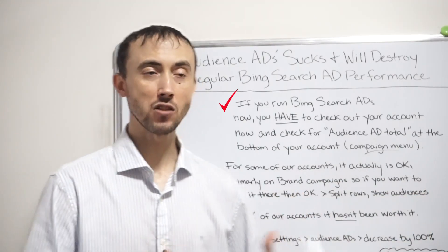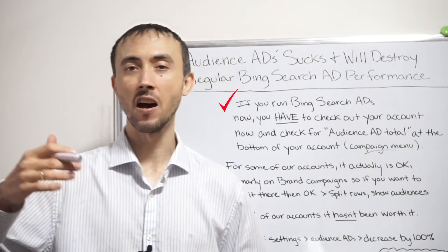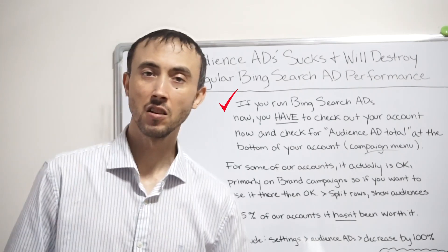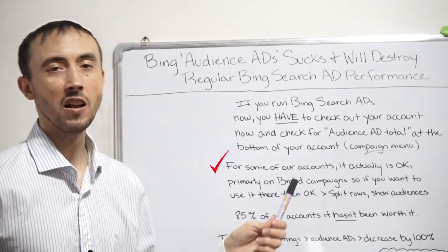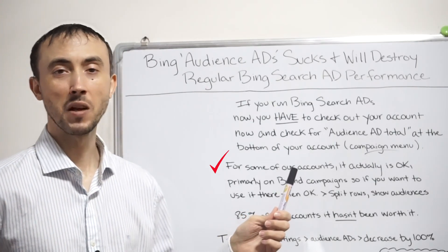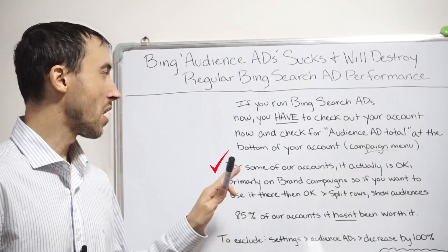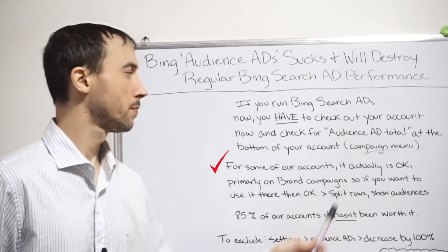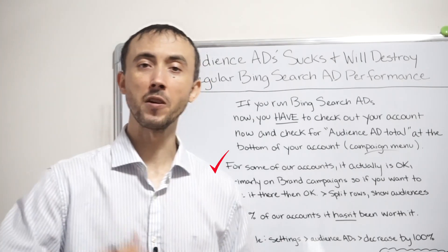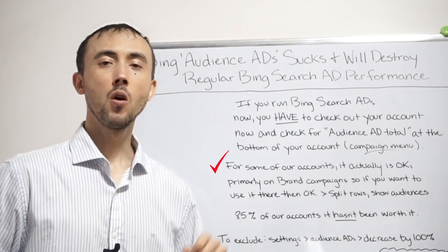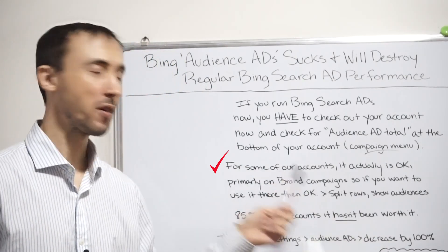Some accounts actually do get sales from the audience ad network side of Bing ads. For some of our accounts it's actually okay to run the audience ad network — particularly on brand campaigns. That's where we see sales coming through this audience ad network, specifically from the brand campaign. So if you want to use it, the brand campaign is where that might be okay.